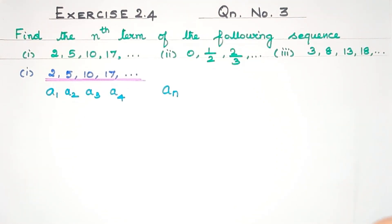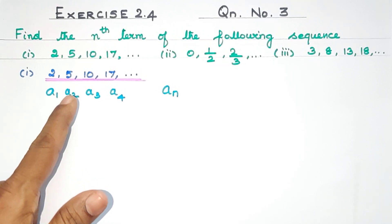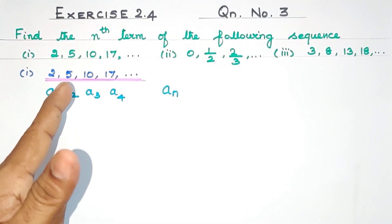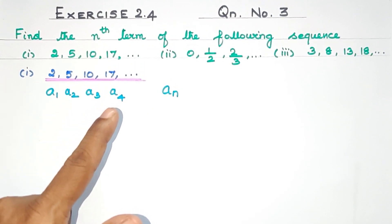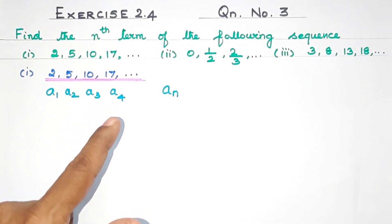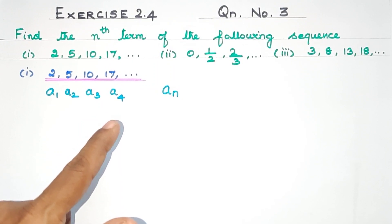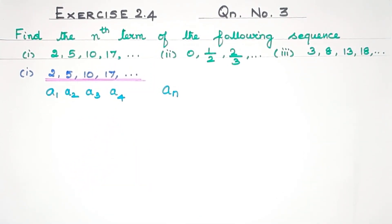Usually for a sequence, this type of question is easy to solve. Because the relationship between the first term and second term — that same mathematical relationship holds. 5 follows 2, 10 follows 5, 17 follows 10. That is the consecutive terms sharing the same mathematical relationship.